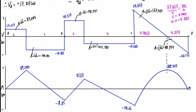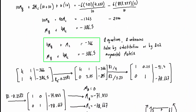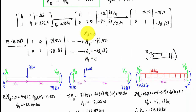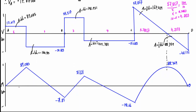We can verify these values against the internal moments calculated earlier in the problem. We had MA = 0, MB = negative 71.833, MC = negative 78.667, and MD = 0. Comparing those to the bending moment diagram: 0, negative 71.83, negative 78.66, and 0 — that confirms we've done this correctly.